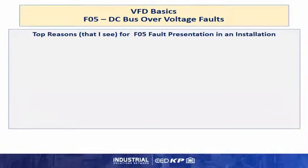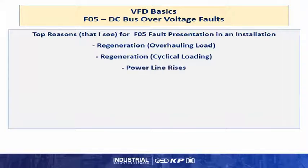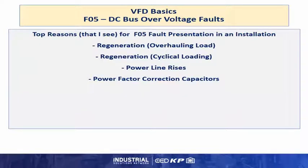The top reasons for the F05 fault presentation in an installation are: regeneration or an overhauling load, where the load is turning the rotor faster than the drive field out to the stator is running; regeneration cyclical loading, typical of presses and things of that nature where you have multiple recycle or regeneration points in a rotation; and power line rises caused by AC line side increases from several sources, including power factor correction capacitors which add to voltage whenever the utility or the facility turn on more capacitance than is needed to correct the line.